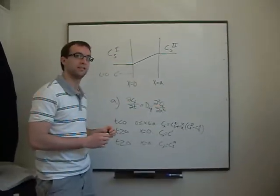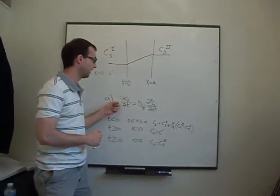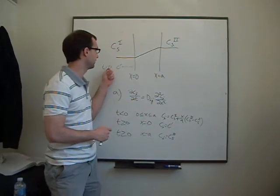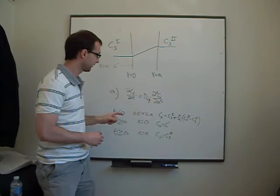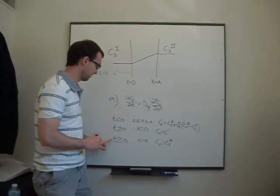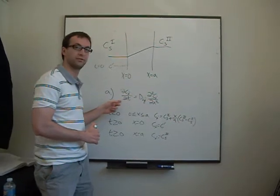Okay, so this is the solution for part A. Here's your differential equation after time is greater than zero, trying to figure out what's going on in this membrane. And here are your boundary conditions and your initial conditions that you'll use to be able to solve this partial differential equation.